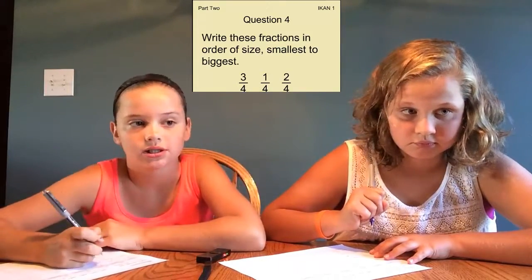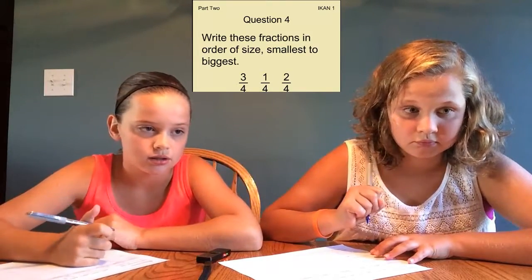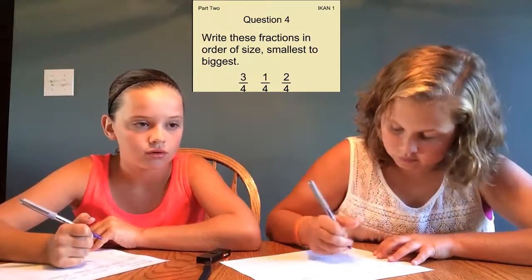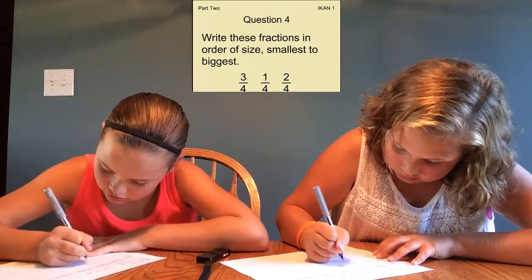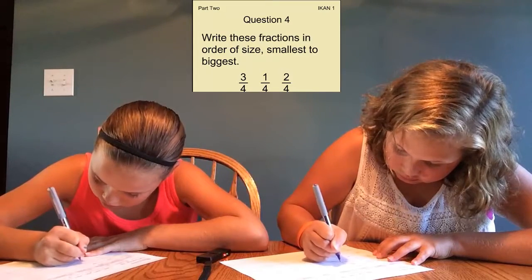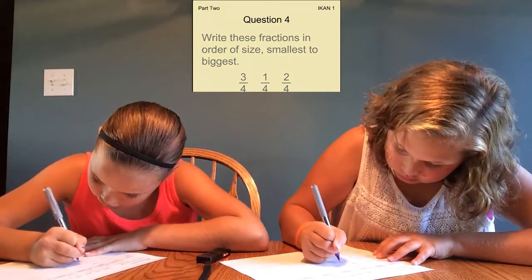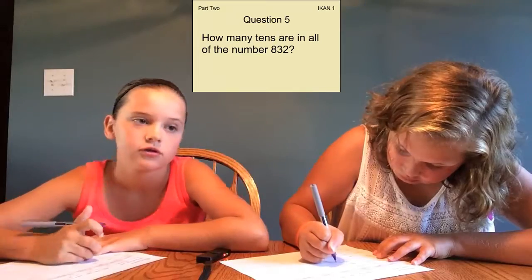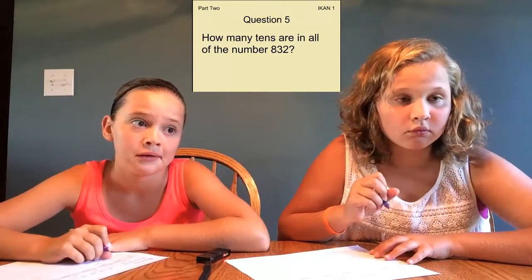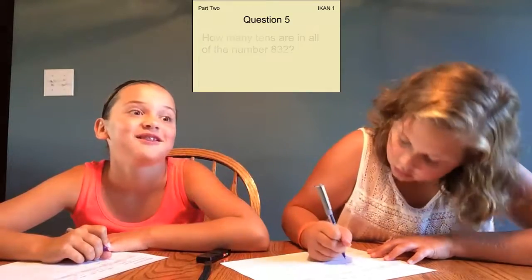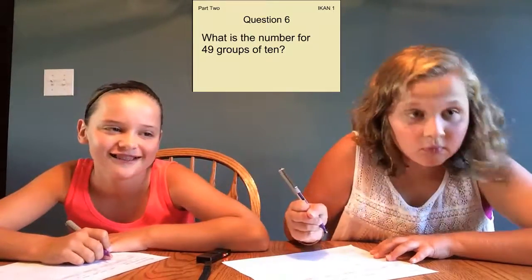Write the fraction for 5 quarters. Write these fractions in order of size, smallest to biggest: 3 quarters, 1 quarter, 2 quarters. How many tens are in all of the number 832? What number is 1 more than 432?